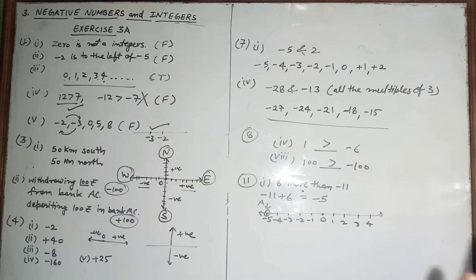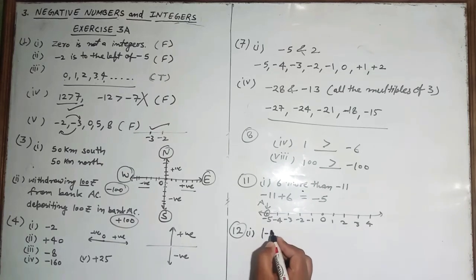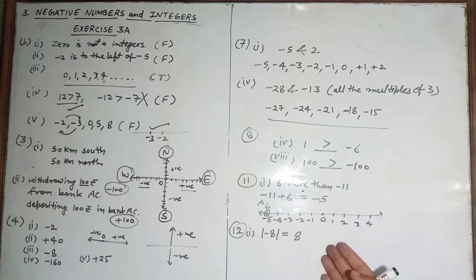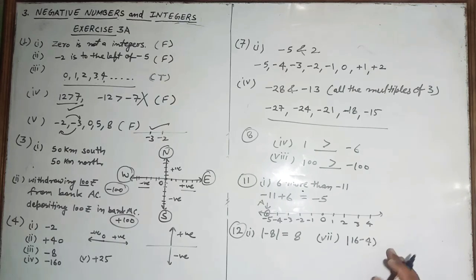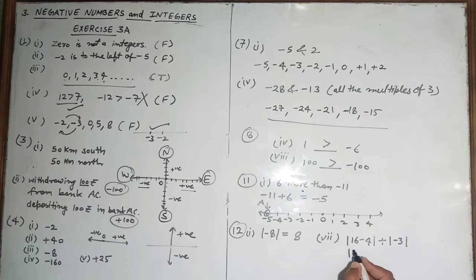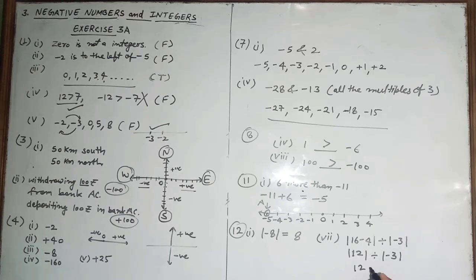Question number twelve: write the value of each expression. First part: mod of minus eight equals plus eight, because the modulus always gives a positive value. Seventh part: mod of (16 minus 4) divided by mod of minus 3. That is mod 12 divided by mod minus 3, which gives 12 divided by 3, so the answer is 4.